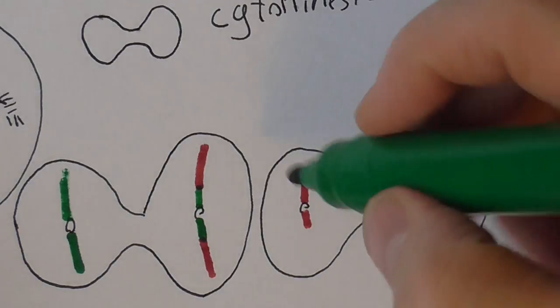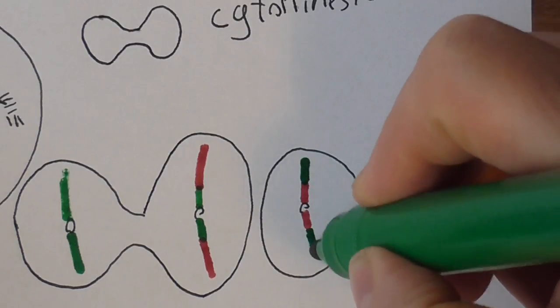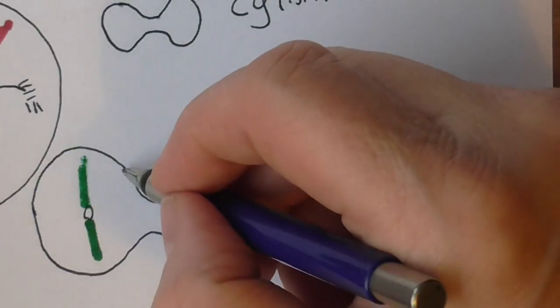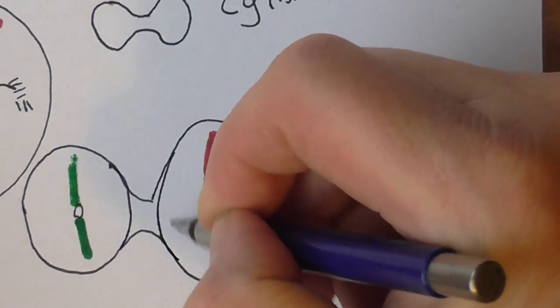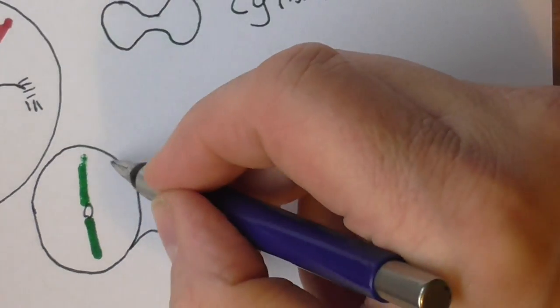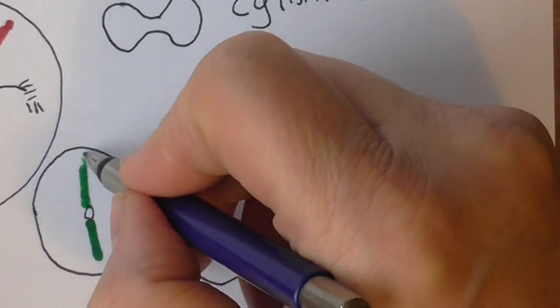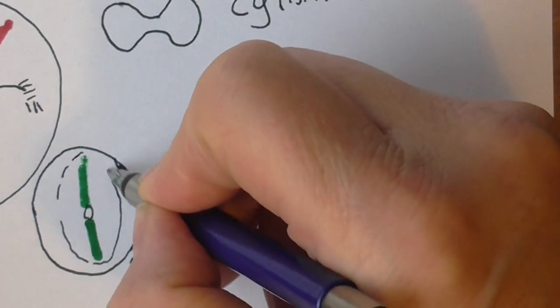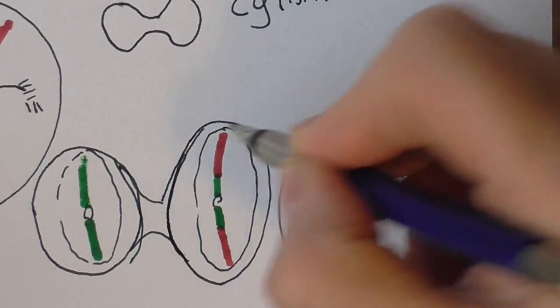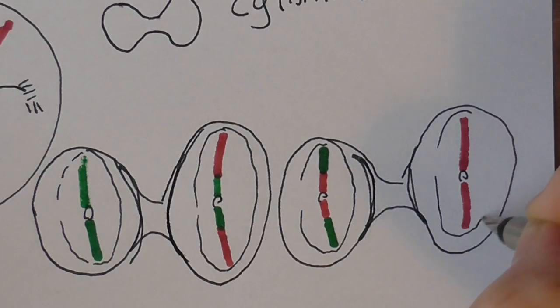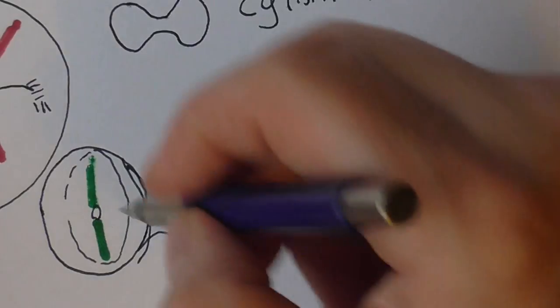So we now have four gametes, genetically distinct from the parent cell. And of course these will fully separate, making completely individualized gametes. The nuclear envelope will reform so that the chromosomes are again inside a separated nucleus. And there we have four gametes.